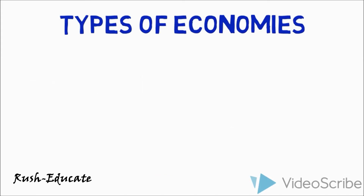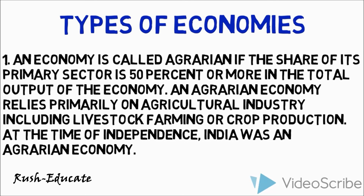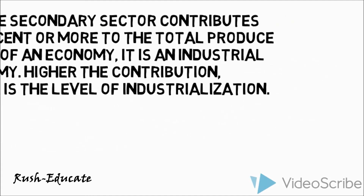Depending upon the shares of particular sectors in the total production of an economy and the ratio of the dependent population on them for their livelihood, economies are given different names. 1. Agrarian economy: an economy is called agrarian if the share of its primary sector is 50% or more in the total output of the economy. An agrarian economy relies primarily on agricultural industry, including livestock farming or crop production. At the time of independence, India was an agrarian economy.